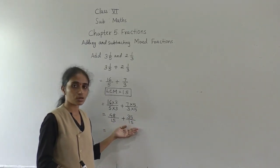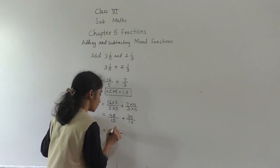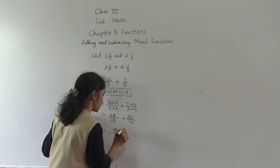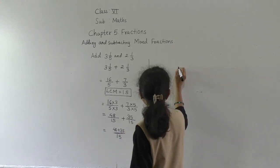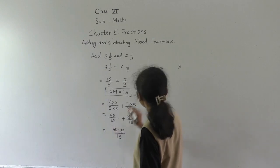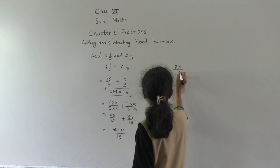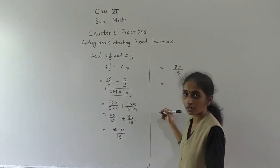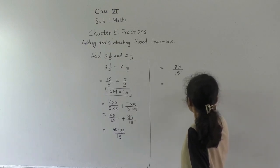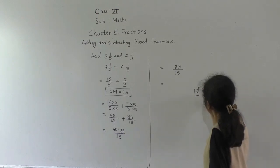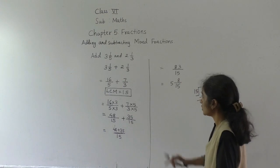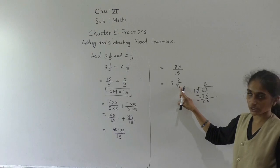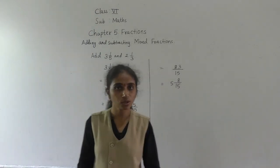Denominators are now the same, so we add the numerators: 48 plus 35. 8 plus 5 is 13, carry 1; 4 plus 3 is 7, plus 1 is 8. So we get 83 upon 15. This is an improper fraction, so we convert it to a mixed fraction: 15 fives are 75, remainder 8, giving 5 and 8 upon 15. Thank you.